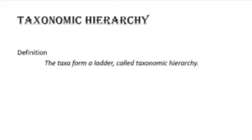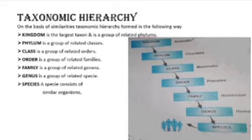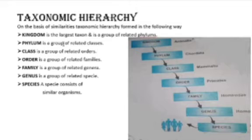They form big groups, small groups, and smaller groups. When we classify and organize them, that is called taxonomic hierarchy. On the basis of similarities, we classify and organize groups. The major groups, the biggest groups, are what form taxonomic hierarchy.